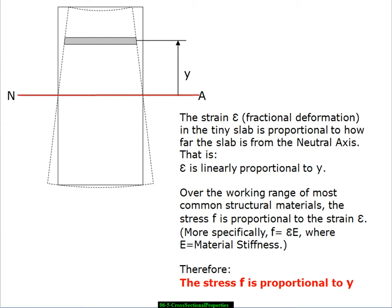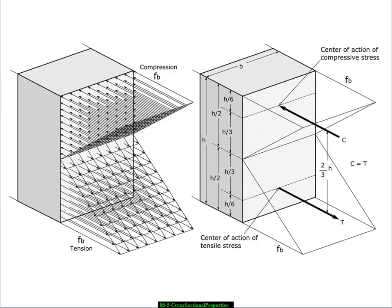We've also noted that over the working range of most common structural materials, the stress is proportional to the strain, or more specifically, we have the formula stress is equal to strain times the material stiffness, E. So if we know that F is proportional to the strain and the strain is proportional to y, then we know that the stress is proportional to y. And we end up with a stress block that looks something like this. High stress and compression at the top, going linearly to zero at the neutral axis, and then going linearly to a high tensile stress at the bottom.